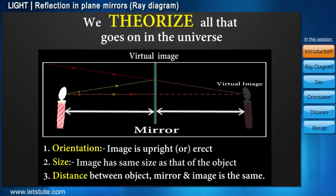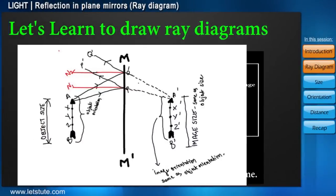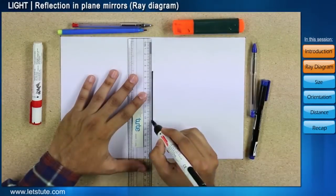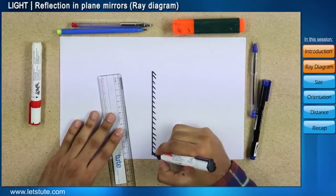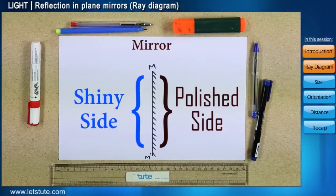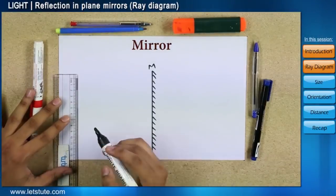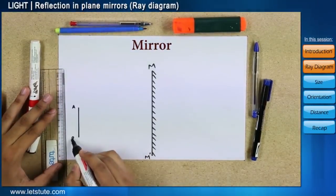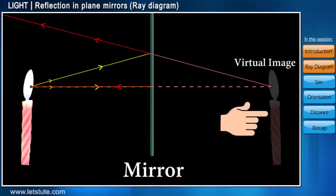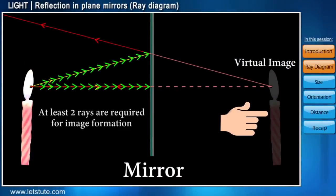Earlier, we just saw those ray diagrams. In this session, we'll learn how to make them. Friends, this process is not at all difficult. Let's take it step by step. Let there be a plane mirror denoted as M, M dash. Now, let there be any object AB placed in front of it. As mentioned before, for an image to form, at least two rays of light are required to be in the picture.